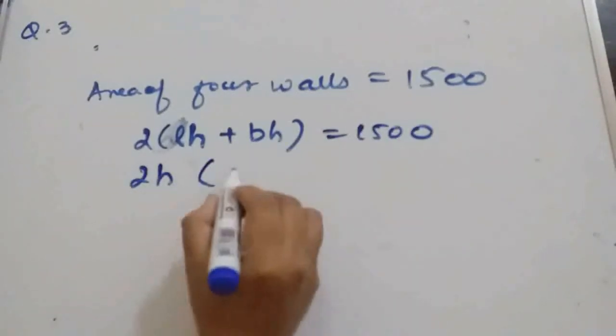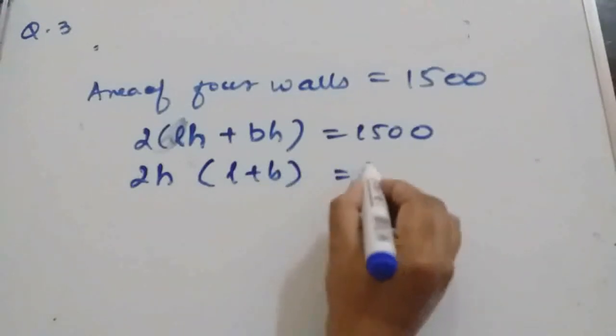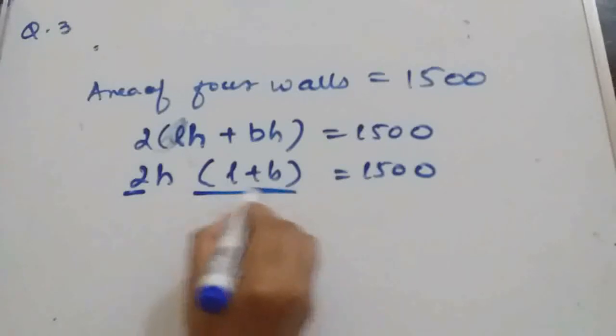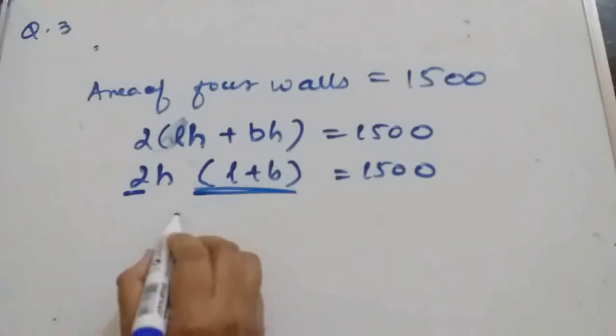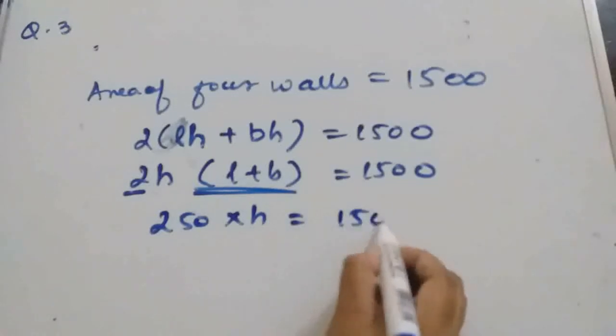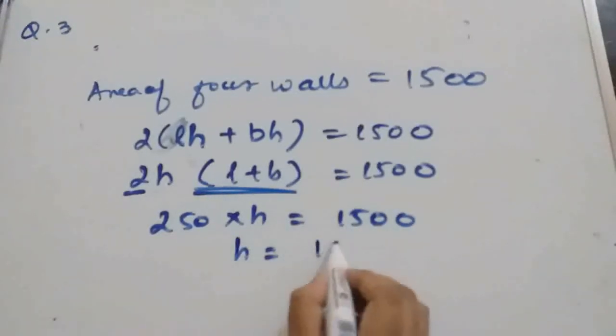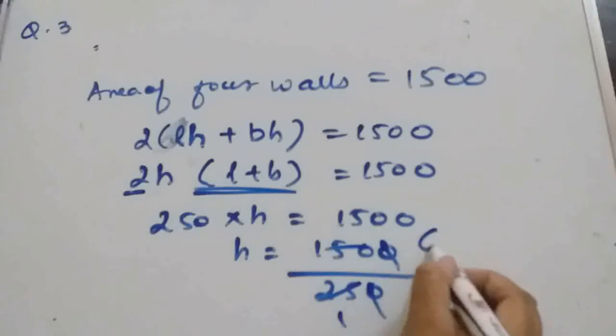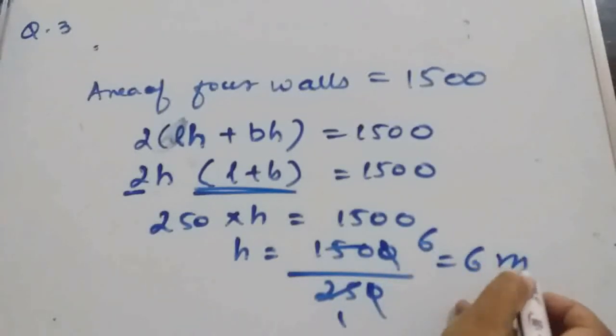H we can take common. 2H times L plus B is equal to 1,500. Now from equation 1 we got the value of these expressions. 2 into L plus B is what? 250. That we can write. So H will be 1,500 divided by 250, which will give 00 cancel, 25, 6, 150.